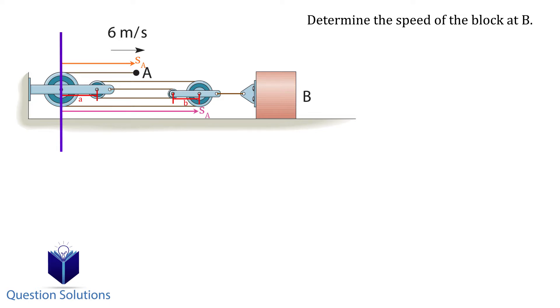Now we can write an equation to represent the cable. Remember that we only need one since it's one cable. So we have SA plus SB plus 2 times SB minus AB plus SB minus A is equal to length 1.